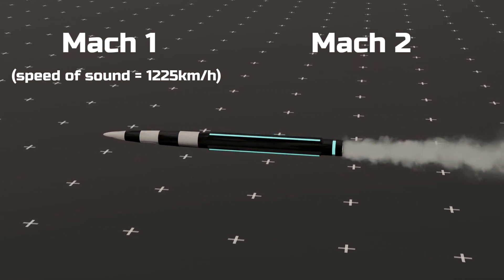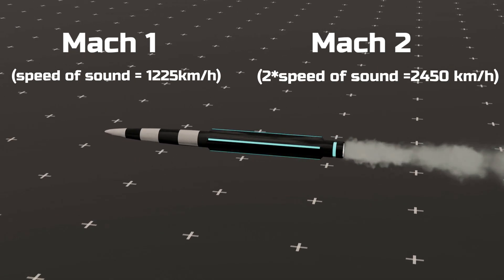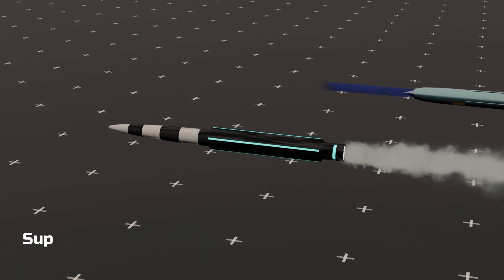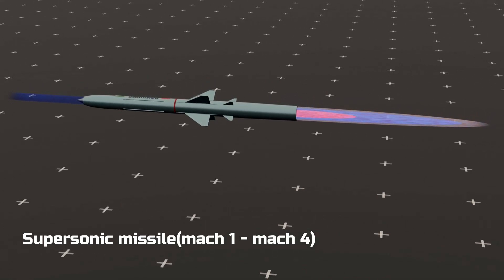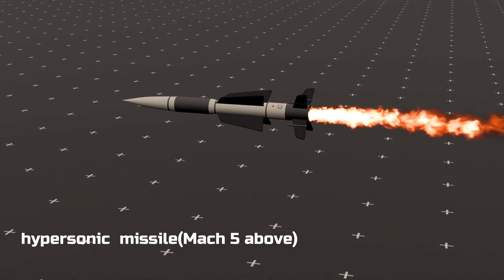Consequently, Mach 2 is twice the speed of sound, and higher Mach numbers represent even greater velocities. Supersonic missiles are those operating between Mach 1 and Mach 4, while hypersonic missiles exceed Mach 5.